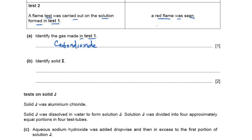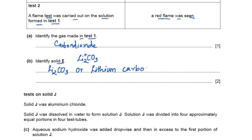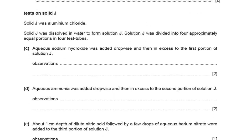Remember that the red flame in a flame test is produced by lithium. So the cation in solid I should be the lithium ion, and since carbon dioxide is produced with the acid, the anion should be carbonate. Therefore solid I is lithium carbonate — formula Li₂CO₃. You can write either the formula or 'lithium carbonate'.